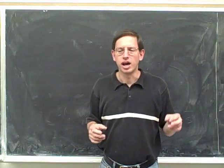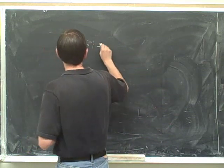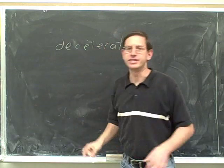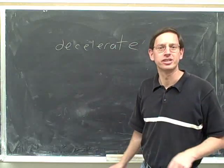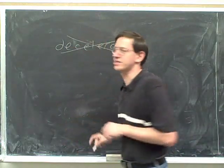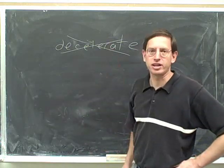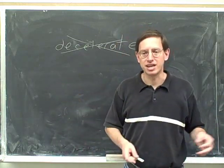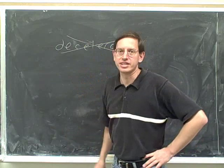I'd like to say a word about the word deceleration. In physics, you should not use this word. Do not use the word decelerate or deceleration in physics. This is a confusing word in physics; we're better off not using it. Of course, something that's decelerating is slowing down, but don't say it's decelerating. Just say it's slowing down. If something is slowing down, we'll just say that it is slowing down. We're not going to say that it's decelerating.